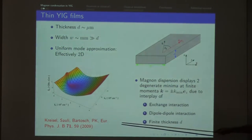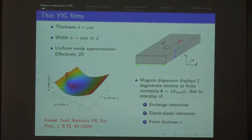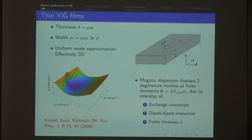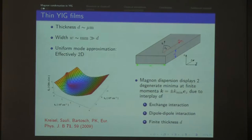If you do a spin wave theory using a Holstein-Primakoff transformation, you have to include dipole interactions and finite thickness, which is some work to do. Matching spin waves in such a film is non-trivial. At the beginning of this collaboration we started with this problem and tried to get very good control of the spin wave dispersion of these YIG films.